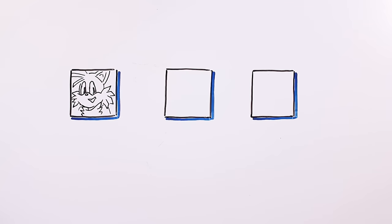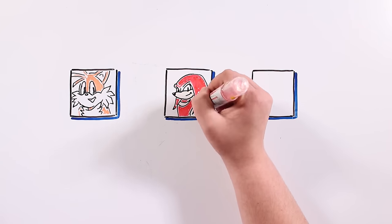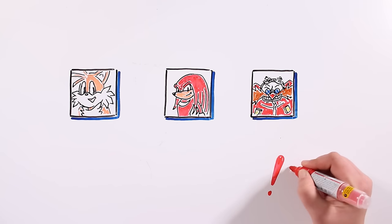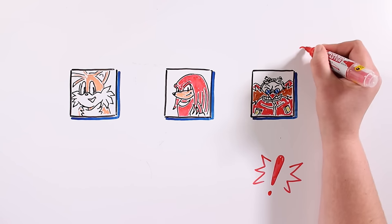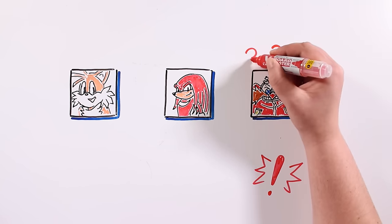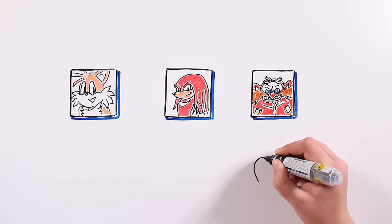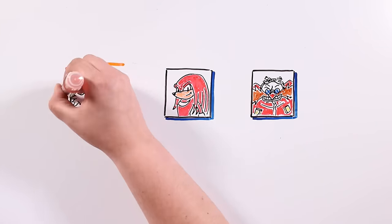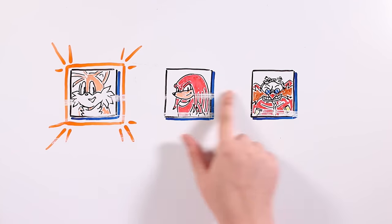When the screen to choose a character appeared, there were Tails, Knuckles, and Dr. Robotnik. Now I knew for sure something was going on. I mean, how can you play with Robotnik in a classic Sonic game? At that point, I realized I was playing a hacked game. I kept on with it. I chose Tails and the game froze for like five seconds.